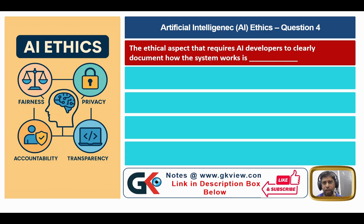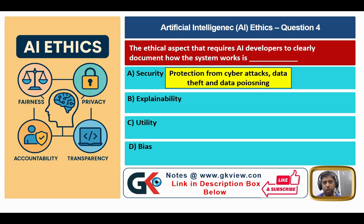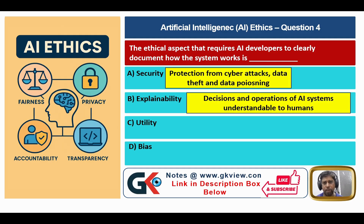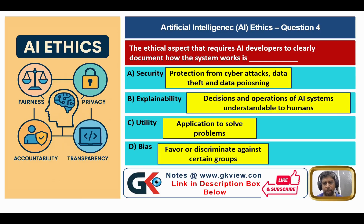Question number four: the ethical aspect that requires AI developers to clearly document how the system works. Option A: security — protection from cyber attacks, data theft, and data poisoning. Option B: explainability — decisions and operations of AI systems understandable to humans. Option C: utility — application to solve problems. Option D: bias — favor or discrimination against certain groups. The question asks about clearly documenting how the system works, so the answer is B — explainability.